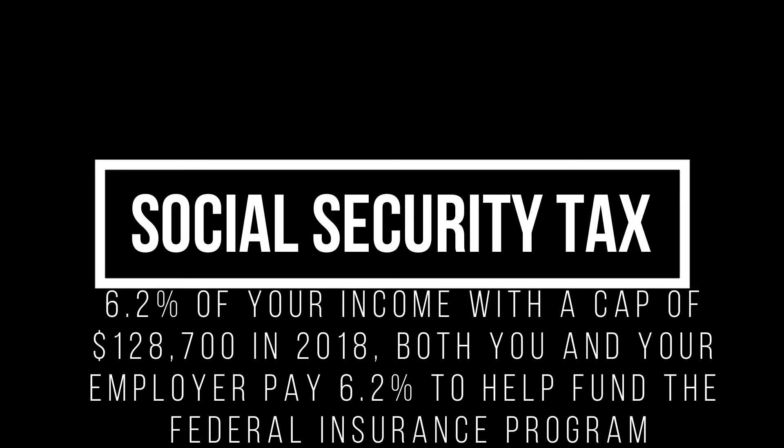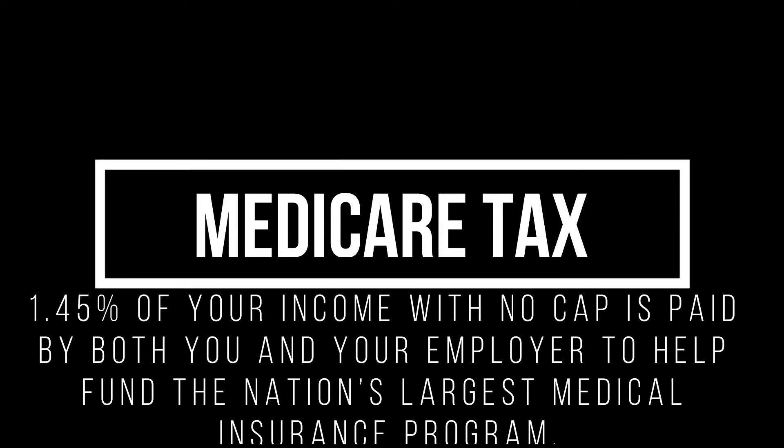Social Security tax is just one part of the FICA tax — the Social Security portion. It represents 6.2% of your income, with a cap of $128,700 in 2018. So the first $128,700 you earn is subject to the 6.2% tax; after that, no more Social Security tax applies. Both you and your employer each pay 6.2%, so both are liable for that percentage.